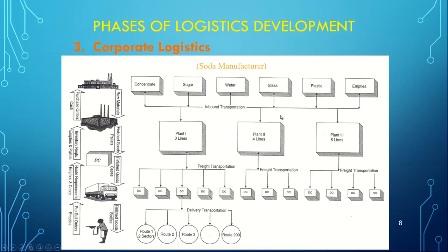With the expansion of industry and companies owning many facilities, logistics interaction moved to the organization or corporate level. A company with more than one plant needs to move goods from one facility to another, requiring a distribution center, multiple plants, and a transportation fleet. Logistics evolved to include operations at the corporate level, covering the flow from raw material to factory to distribution center to the end customer.